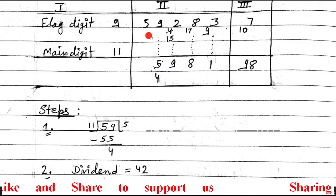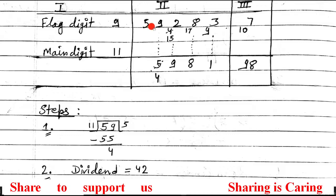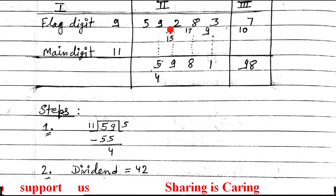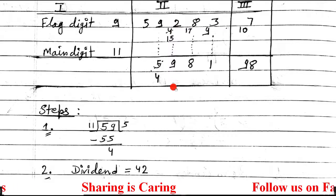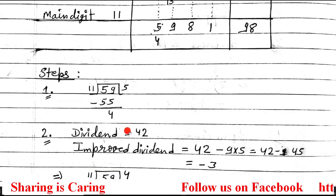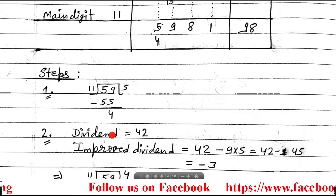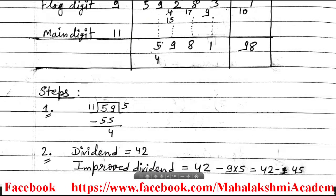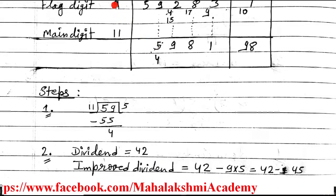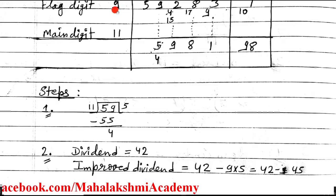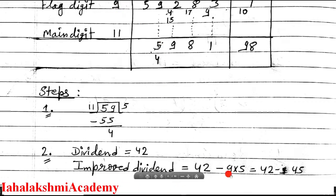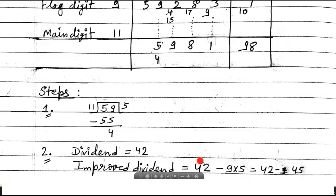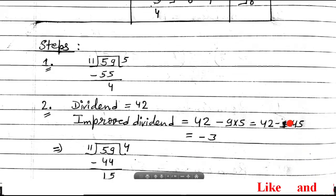For the first step the dividend was 59, and for the second step the dividend is 42 — read it as 42. In the second step, we need to find the improved divider. Multiply flag digit 9 by 5 to get 45. That is the use of the flag digit — it is only used to improve the divider. Dividend obtained was 42, so 42 minus 9×5 = 42 minus 45 = minus 3. Since the improved divider is negative, you can't divide, so you must improve it further.